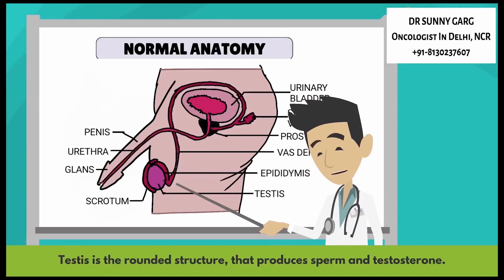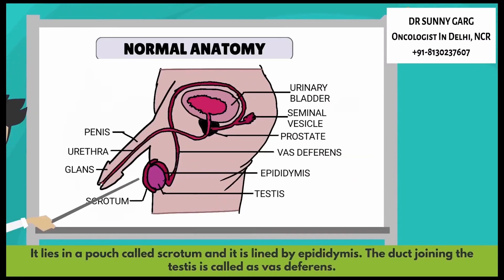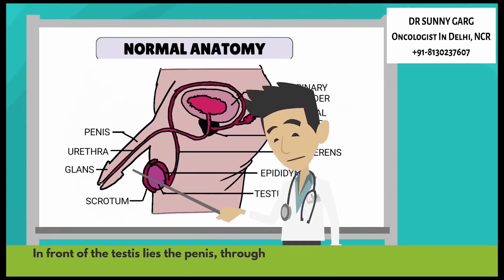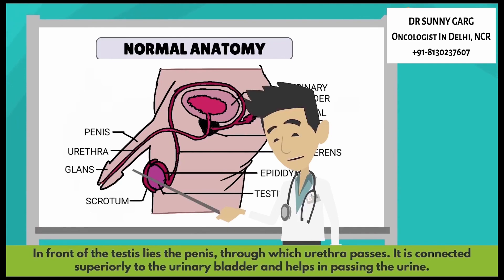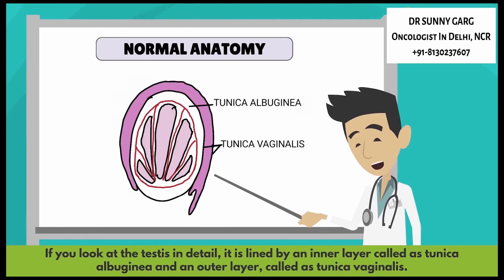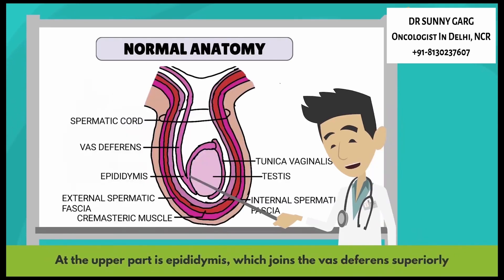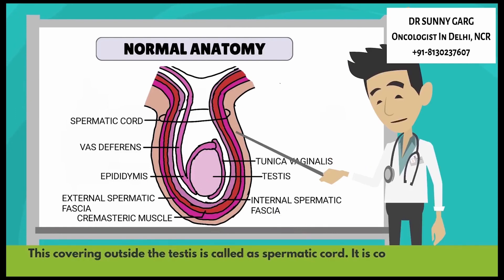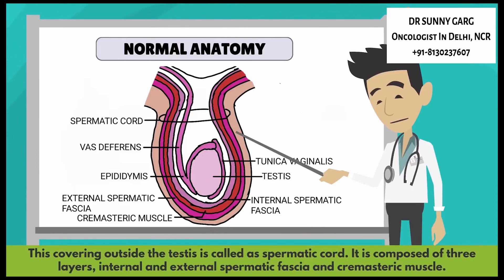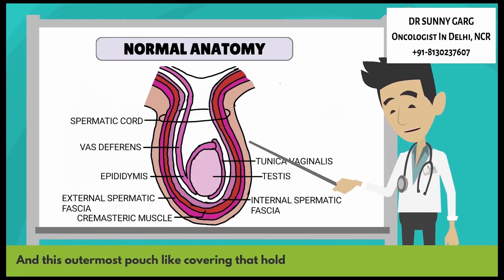The testis is a rounded structure that produces sperm and testosterone. It lies in a pouch called the scrotum and is lined by the epididymis. The duct joining the testes is called the vas deferens. It is lined by an inner layer called the tunica albuginea and an outer one called the tunica vaginalis. The covering outside the testes is called the spermatic cord, which is composed of three layers: internal and external spermatic fascia and cremasteric muscle. The outermost pouch-like covering that holds both testes is called the scrotum.